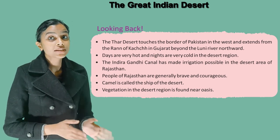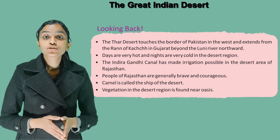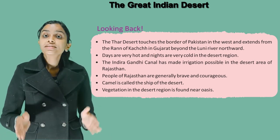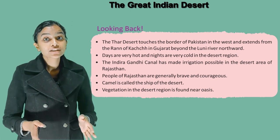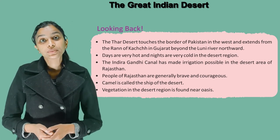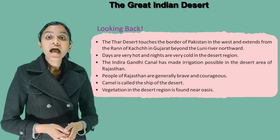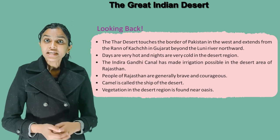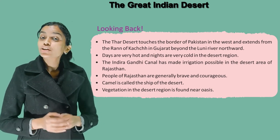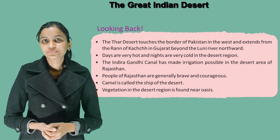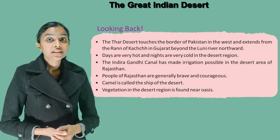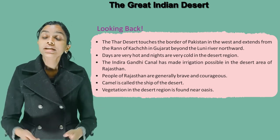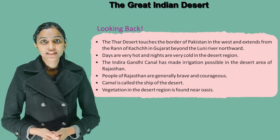Looking back: The Thar Desert touches the border of Pakistan in the west and extends from the Rann of Kutch in Gujarat beyond the Luni River northward. Days are very hot and nights are very cold in the desert region. The Indira Gandhi Canal has made irrigation possible in the desert area of Rajasthan. People of Rajasthan are generally brave and courageous. The camel is called the ship of the desert, and vegetation in the desert is found near oases.